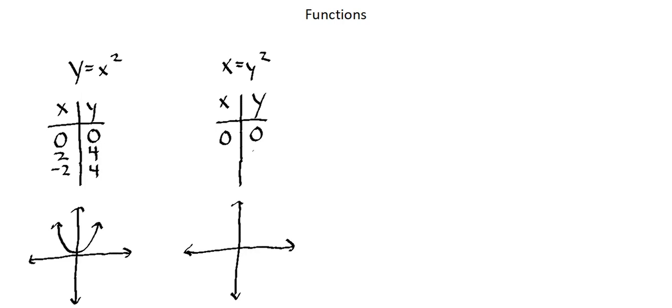Now for 2, 2 squared is 4. Input of 2, output of 4. And for negative 2, we also have an x value of 4. And when we graph this equation, we have another parabola. It looks a bit different because it's sideways as opposed to opening up. It's opening to the right.